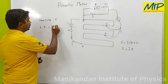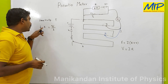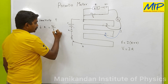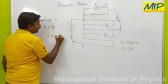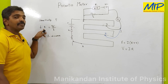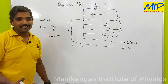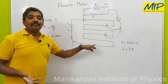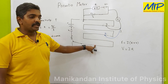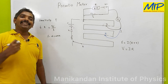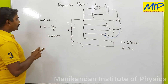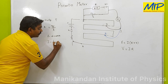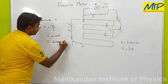Since K equals V divided by L, if you want to decrease the potential gradient, the length of the potentiometer should be increased. If L increases, the potential gradient decreases, and a lower potential gradient means higher sensitivity. Another way is by varying the rheostat: by decreasing the current through the potentiometer, you can increase the sensitivity. So, to increase sensitivity, increase L and decrease the current.